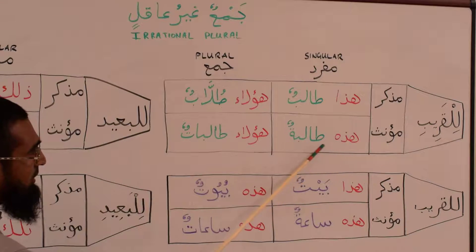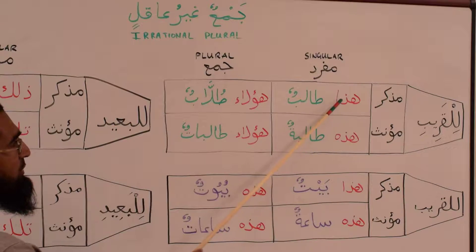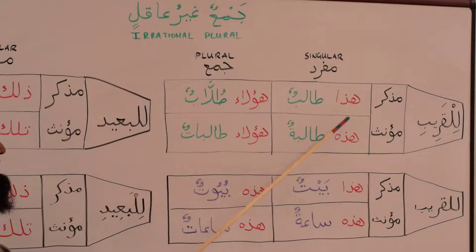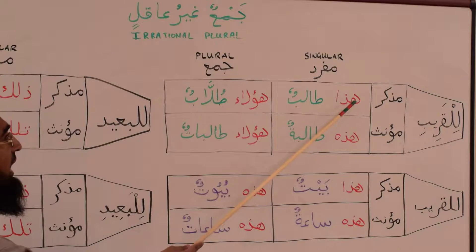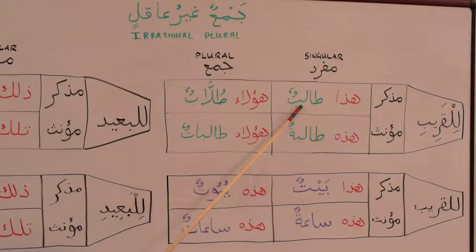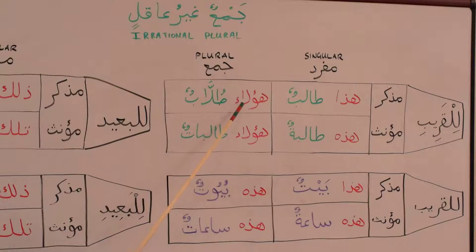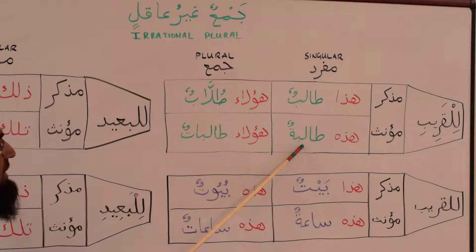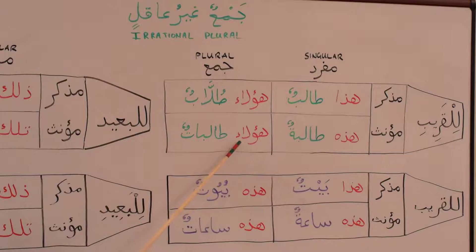And we say هذه طالبة. Why did we switch? Because one is masculine and one is feminine. This is a student (male) and this is a student (female). When we pluralize طالب it becomes طلاب, so if we want to say 'these are students' we say هؤلاء طلاب. When we pluralize طالبة it becomes طالبات — جمع المؤنث السالم — so هؤلاء طالبات, these are students.